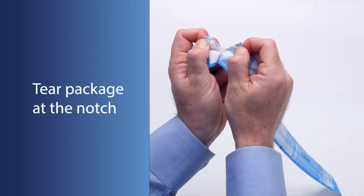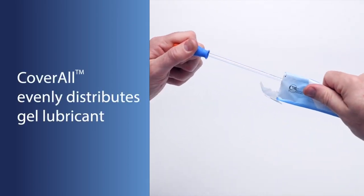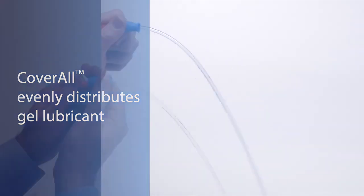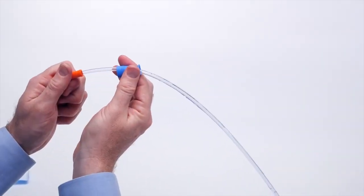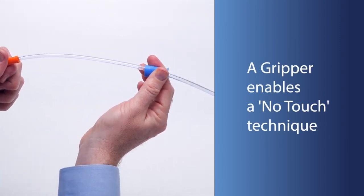As the catheter is removed from the pouch, a unique coverall feature ensures even distribution of gel lubricant. A gripper prevents direct contact with the catheter for clean, controlled use and reduced risk of exposure to bacteria that can lead to infection.